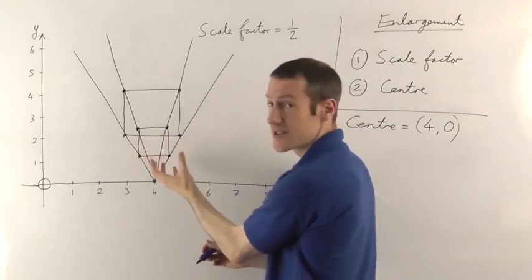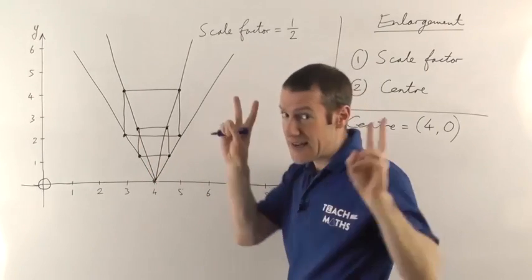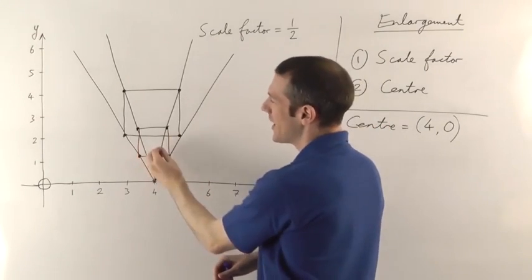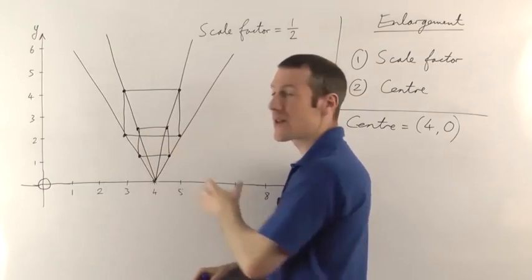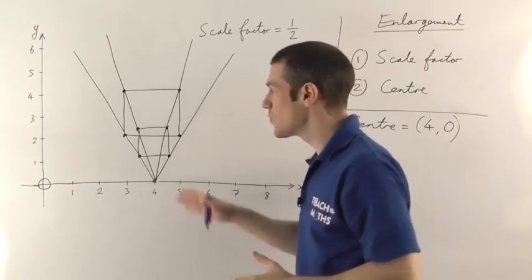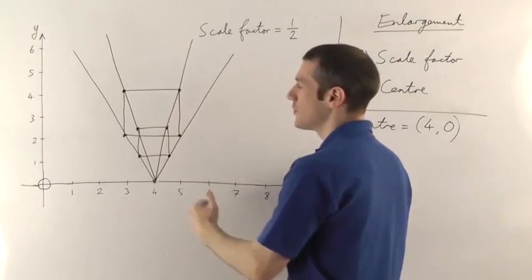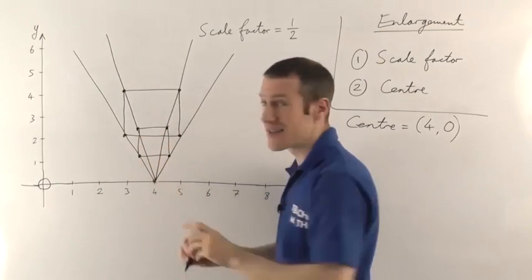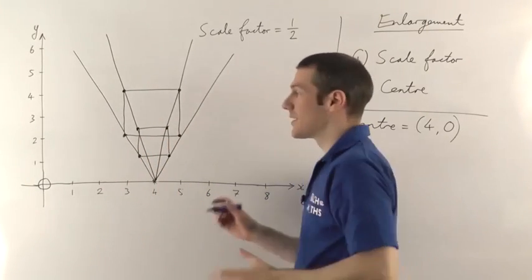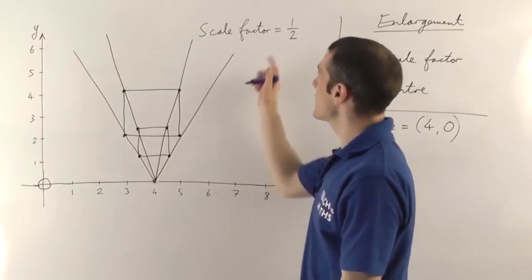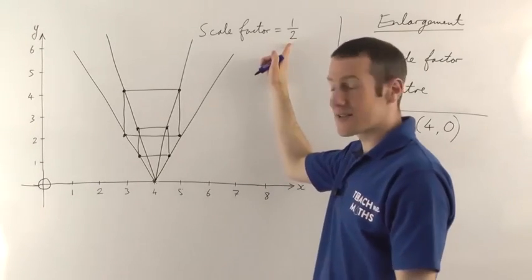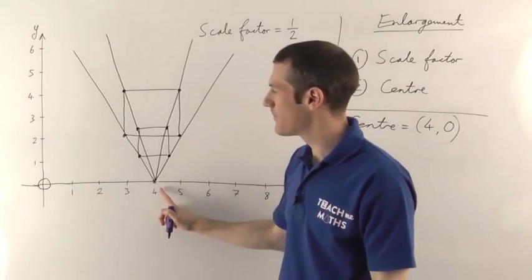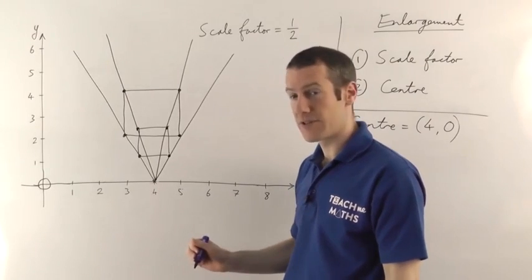The new, enlarged — although really it's smaller — square is overlapping the old square, and that can happen. Don't worry if it overlaps the original; it can also just join up and touch one of the sides, and that's fine too. That's how you would do something where it gets smaller, and in particular where the centre is not the origin.